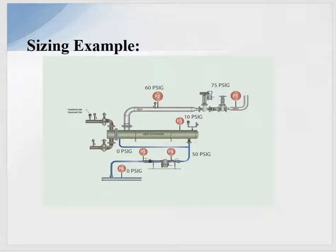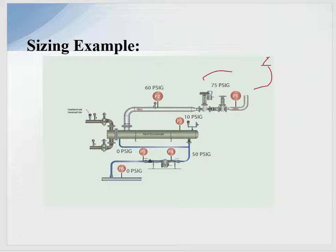For example, the operating pressure to the process is at 75 PSI, but the safety valve is set for 150 PSI. So everything in the system has to be rated for 150 PSI.